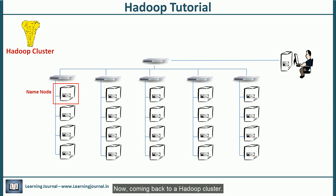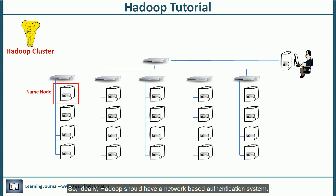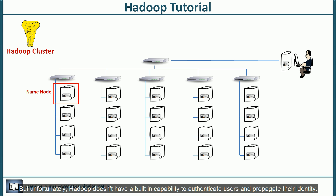Coming back to a Hadoop cluster: Hadoop works on a group of computers, and each computer executes an independent operating system. OS authentication works within the boundary of an operating system, but Hadoop works across those boundaries. So ideally, Hadoop should have a network-based authentication system. But unfortunately, Hadoop doesn't have a built-in capability to authenticate users and propagate their identity.